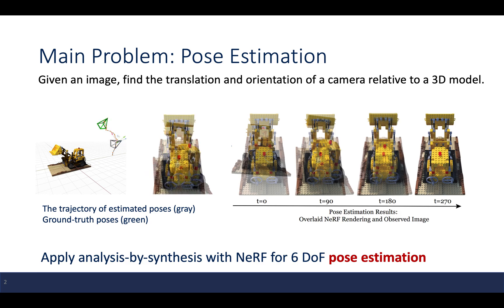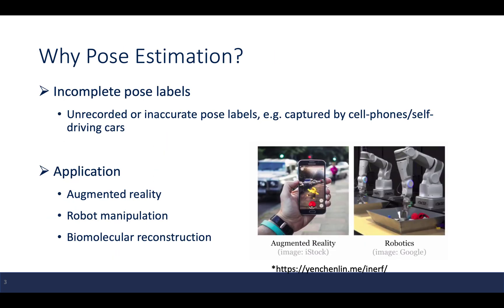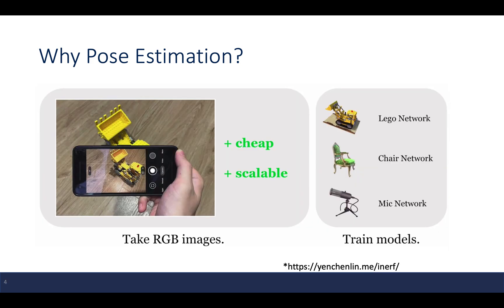The author applied the analysis-by-synthesis method for the 6-degree-of-freedom pose estimation problem. Pose estimation is significant due to incomplete pose labels. The pose labels might be unrecorded or inaccurate due to lack of calibration — for example, images captured by cell phones or self-driving cars. It has applications in augmented reality and robot manipulation. The author tried to train a model that can perform pose estimation in cheap and scalable ways from just RGB images.